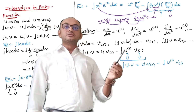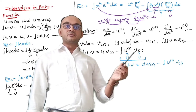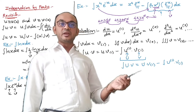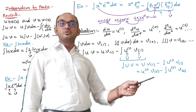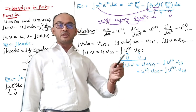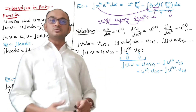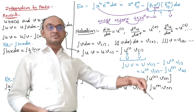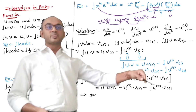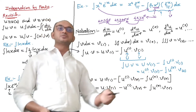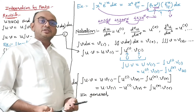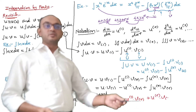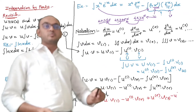Capital U is the first derivative of u and capital V is the first integration of v. So the integral of capital U times capital V can be represented as u₁·v₂ minus ∫u₂·v₂. Substituting back: ∫uv = u·v₁ − u₁·v₂ + ∫u₂·v₂. Continuing this manner: ∫uv = u·v₁ − u₁·v₂ + u₂·v₃ − u₃·v₄ + and so on.